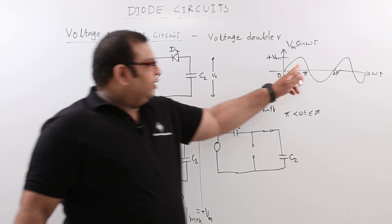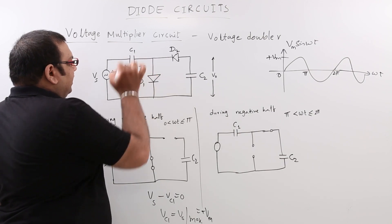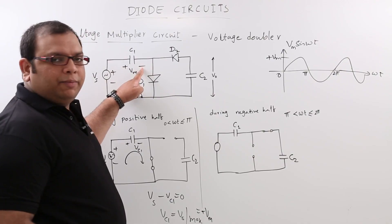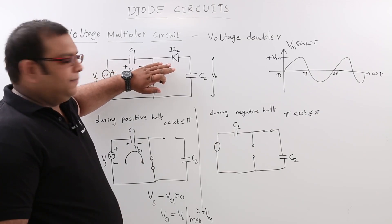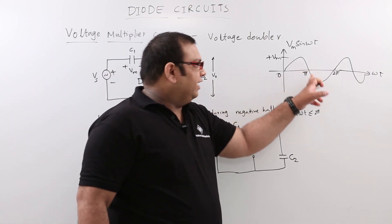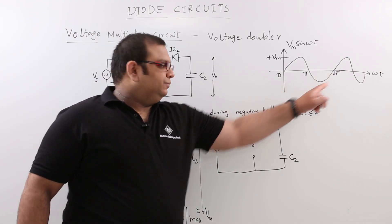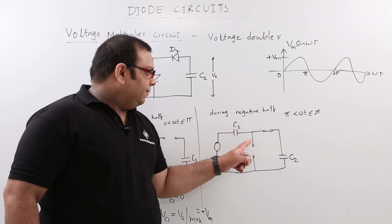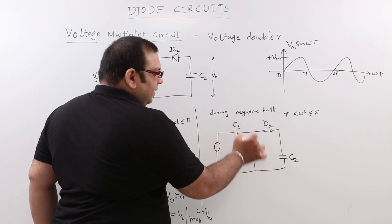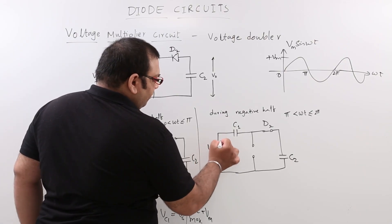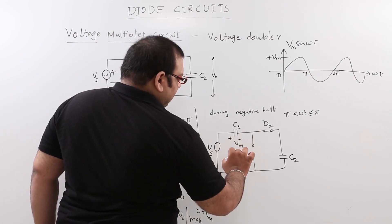During the negative half cycle, the capacitor C1 is already charged to +Vm. Now with +Vm and the negative potential connected to diode D1, D1 will be in reverse biased condition for subsequent cycles. Only D2 will be forward biased during the negative half, from pi to 2pi. So D2 is in on condition and D1 is in off condition (open circuit). We now have Vs and the capacitor voltage Vm, and we take the loop equation accordingly.